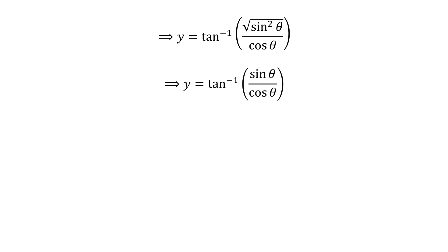We know square root of square of sine of theta is equal to sine of theta, so y is equal to inverse of tangent of sine of theta upon cosine of theta. As sine of theta upon cosine of theta is equal to tangent of theta, so y is equal to inverse of tangent of tangent of theta.